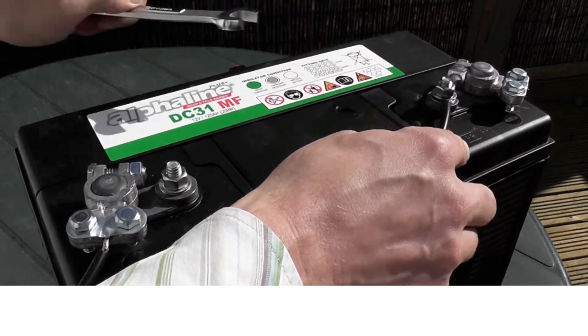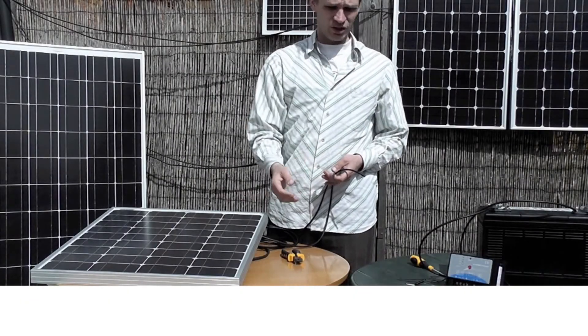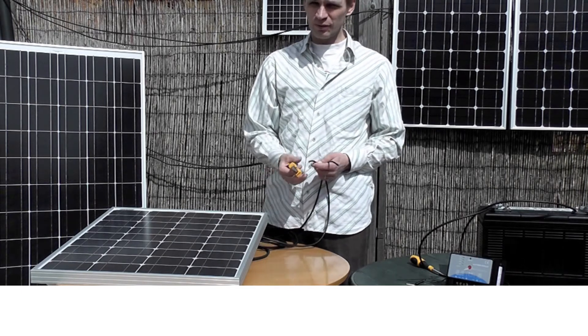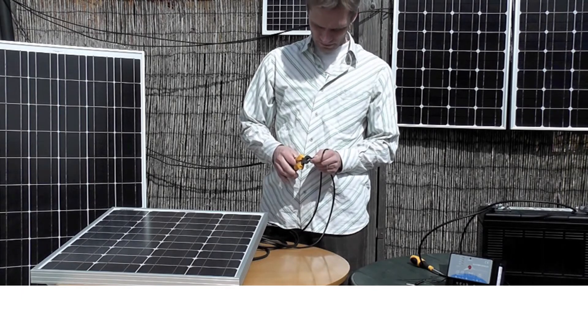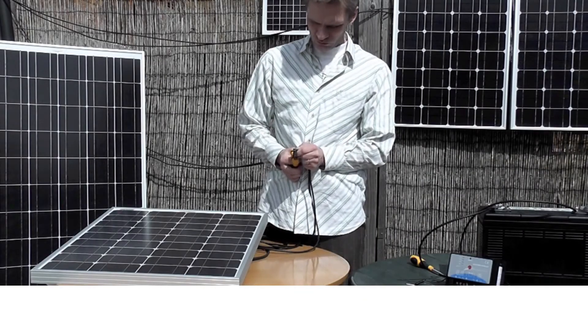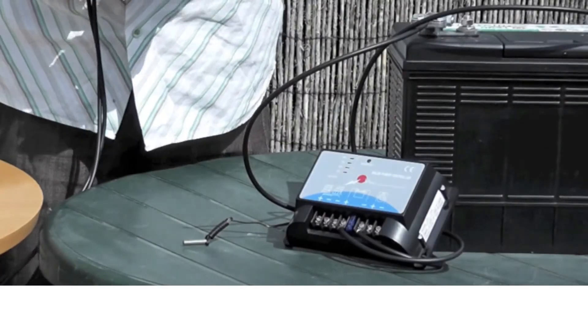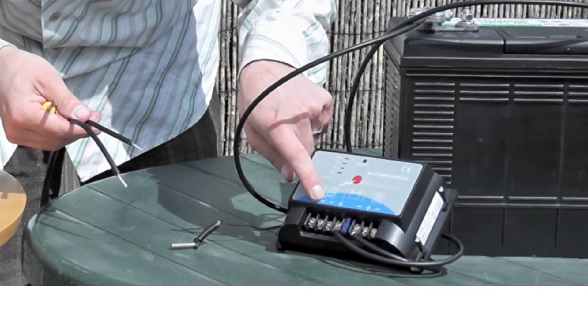Now you have your controller wired into your battery. Now we have to connect the panel to the charge controller. And we do that in exactly the same way, by stripping 1.5cm off the end of the wires. And then simply wiring these in to the charge controller, with the positive here, and the negative here.